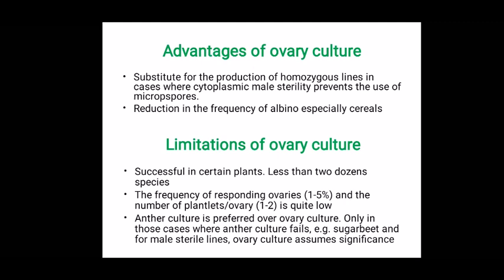Some limitations of ovary culture are discussed here. Successful medium and growth conditions have been optimized for very few plants — fewer than 2,000 species so far. The frequency of responding ovaries is less than 5%, and the number of plantlets per ovary is only 1 to 2, which is very low. Anther culture is highly preferred over ovary culture; only when anther culture fails is ovary culture considered as an alternative option.